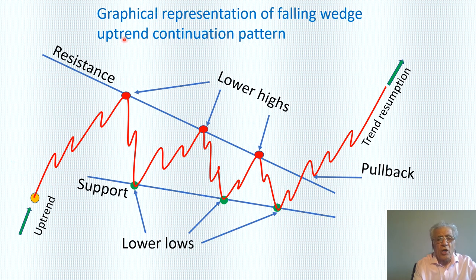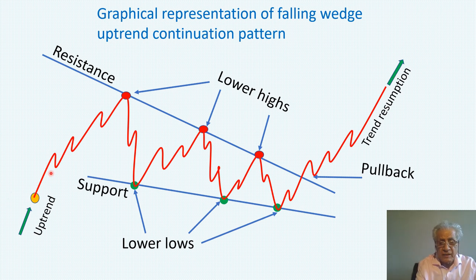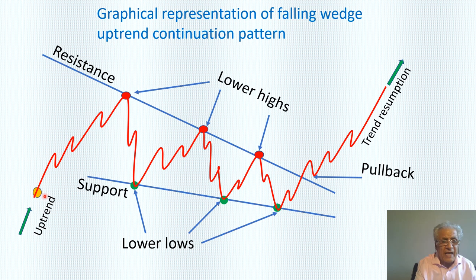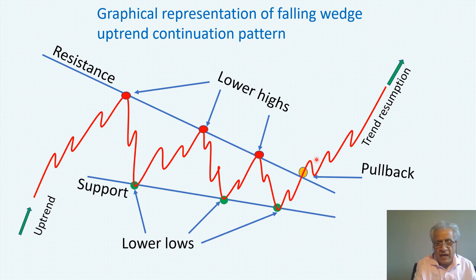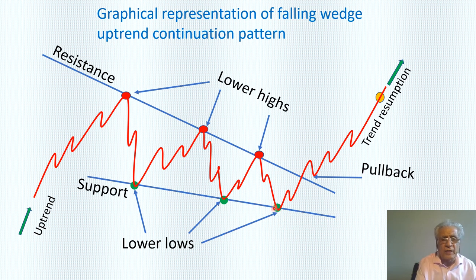This is a graphical representation of a falling wedge uptrend continuation pattern. If the falling wedge pattern is seen in an uptrend, consider it a bullish continuation pattern, resulting in the uptrend losing strength while the price moves from left to right. Look at the motion — the price goes up, enters the falling wedge, hitting the support and resistance lines three or four times, and finally breaks the resistance line, has a little pullback, and goes upward. This is the place where you can enter the market, and you use the last swing lower low as your stop loss.